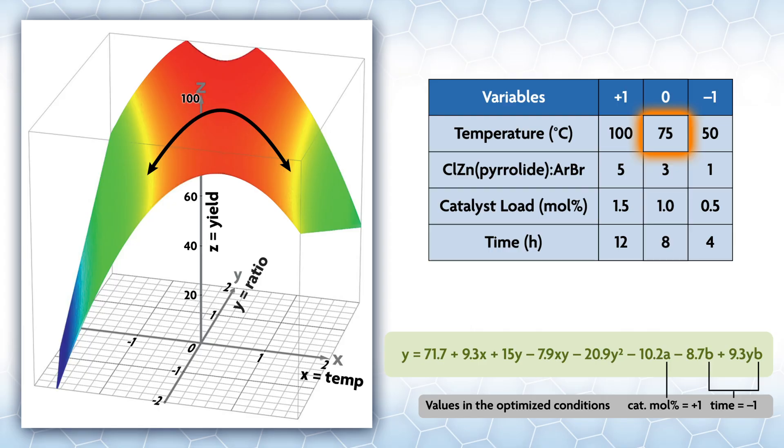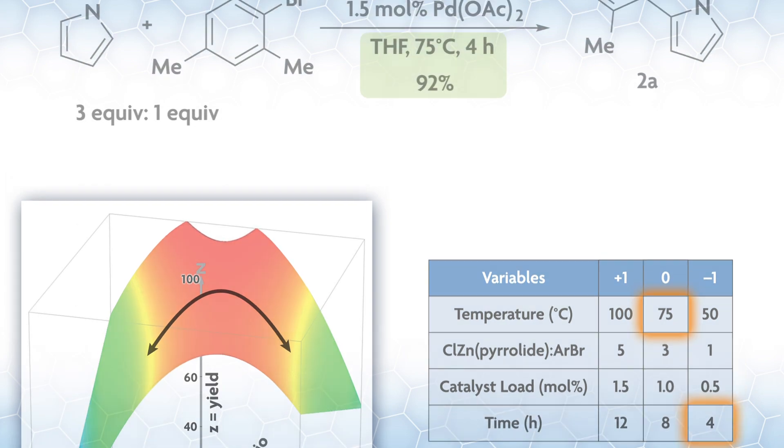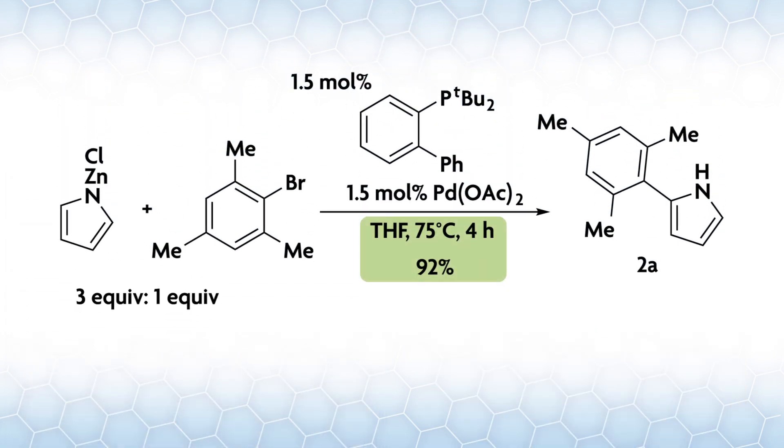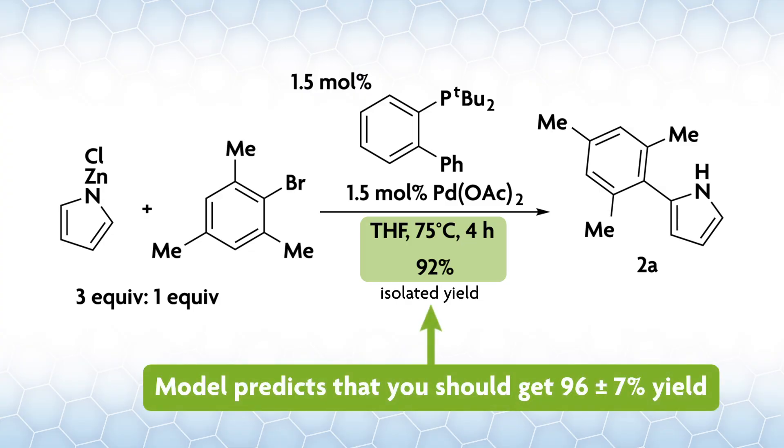Another interesting parameter in the model is time, which has a value that is pretty large and negative. This essentially means the shorter the better when it comes to the reaction time, so we used four hours. The published conditions ran at 100 degrees C for 44 hours. Our optimized conditions are 75 degrees C for just four hours, to give a slightly better yield. Incidentally, the model predicts that you should get 96 plus or minus 7% yield at the optimal conditions, and we got 92% isolated yield.